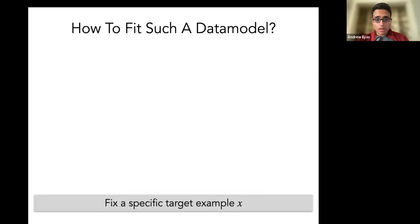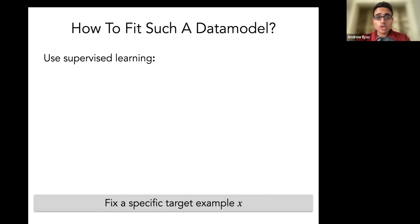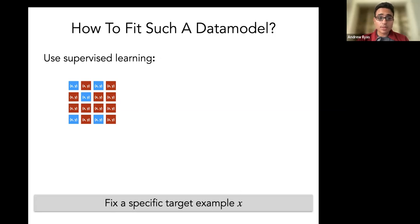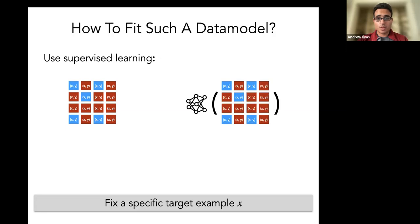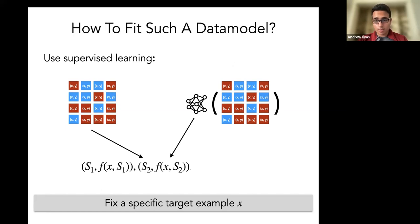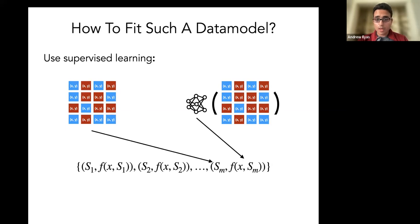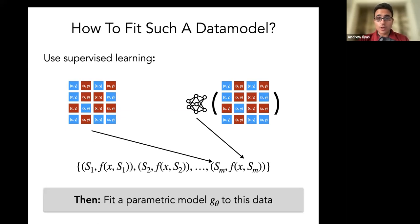One reasonable idea, which is what we do in our paper, is to start by fixing a specific target example x. We use supervised learning: we take our larger training set S and subsample a random subset of the points, which we'll call S'. We then train a model on S' and evaluate it on example x. Those two things together — the subset and the evaluated model output — form one input-label pair. Then we'll sample another random subset, train a model on that random subset, record the output on x, and record that pair. We do this m times. Then we fit a parametric model that maps from the subset S_i to the corresponding model output f(x, S_i).